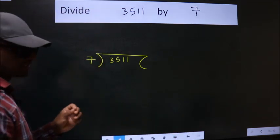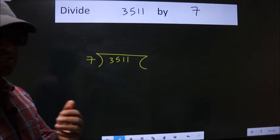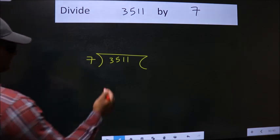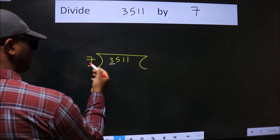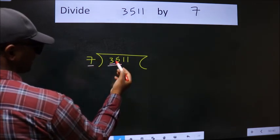This is your step 1. Next, here we have 3, here 7. 3 is smaller than 7, so we should take two numbers: 35.